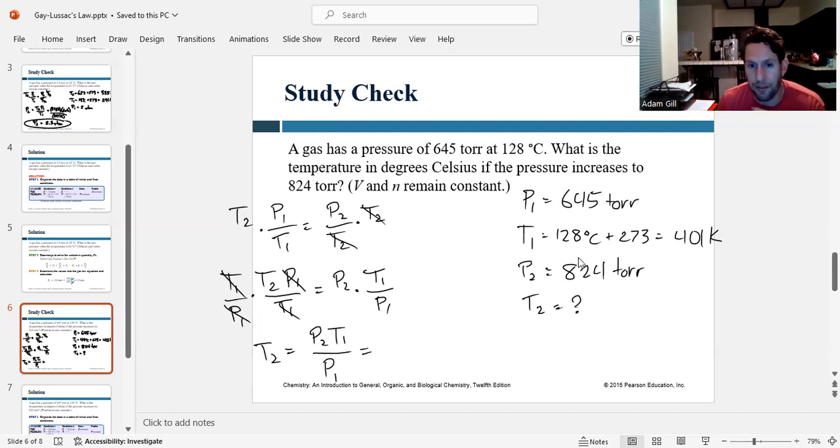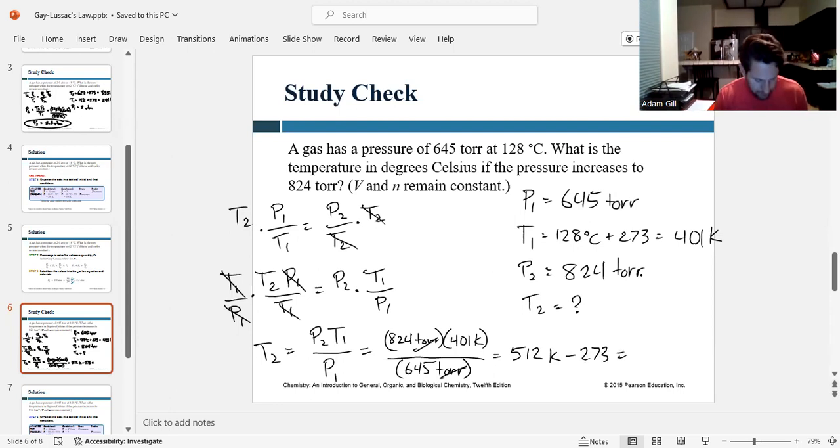So now all we have to do is plug in our numbers and punch it in the calculator. So pressure 2 was 824 torr. Temperature 1 was 401 Kelvin. And initial pressure was 645 torr. So torr will cancel, leaving us just Kelvin, which is good because we're solving for temperature. So if I punch that into the calculator, 824 times 401 divided by 645 gives me 512 Kelvin, but we want to convert that back to Celsius, so minus 273 gives me 239 degrees Celsius.